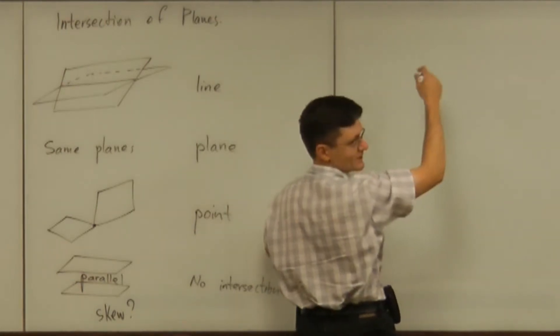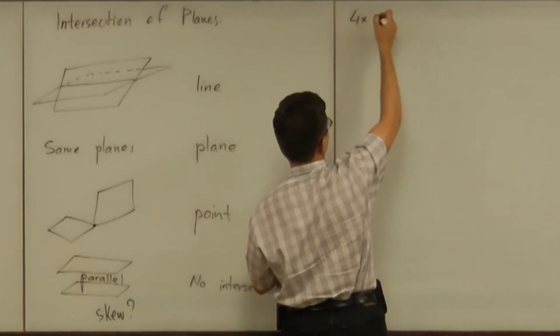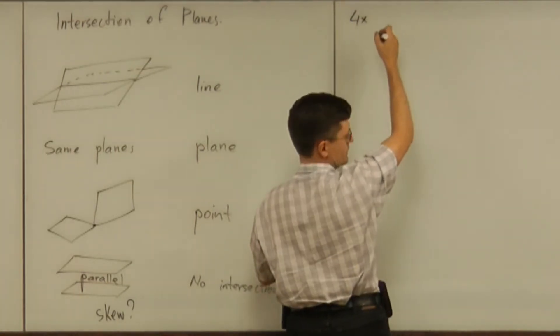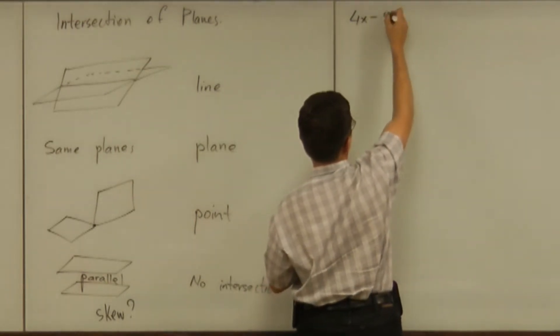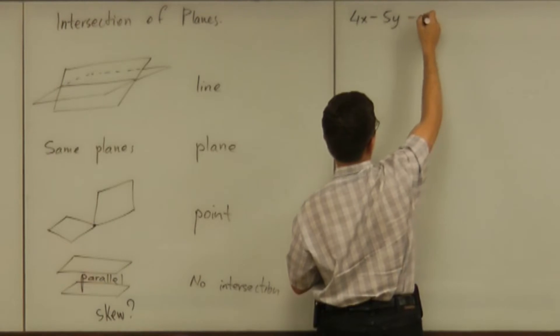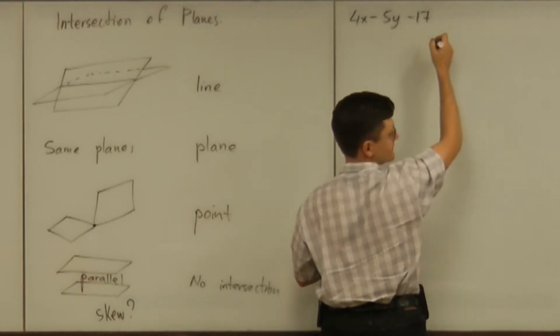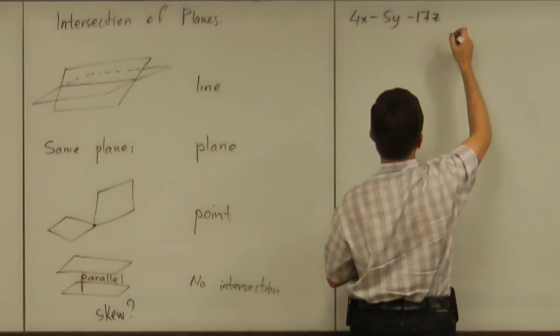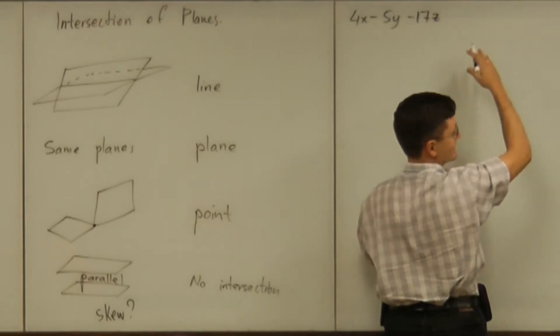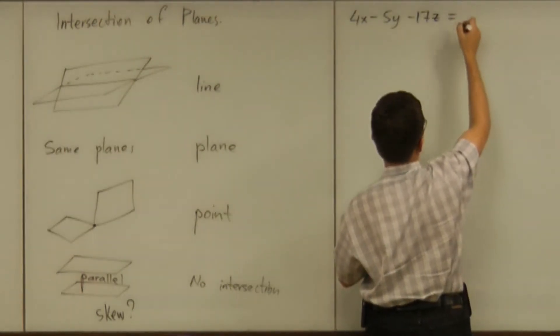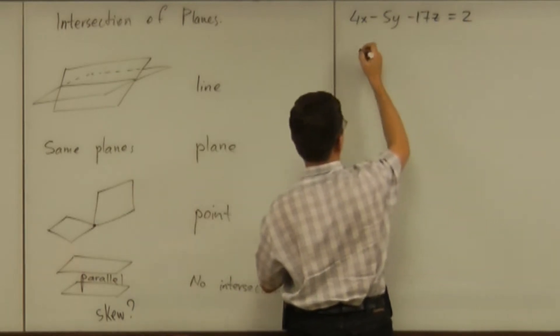Just tell me numbers. Four. Four x. Minus five. I need a lot of them. Minus five y. Negative seventeen. Negative seventeen z. Can you stay between minus ten and ten, please? Equals? Two. Alright.